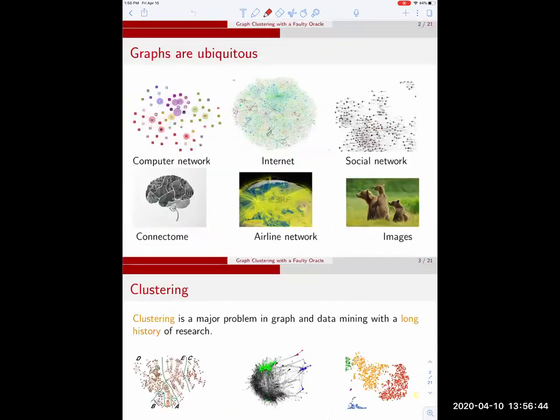As you all know graphs are ubiquitous. They model a wide variety of real-world data sets including computer networks, the internet, social networks, online social networks, our brains, airline networks and also images.